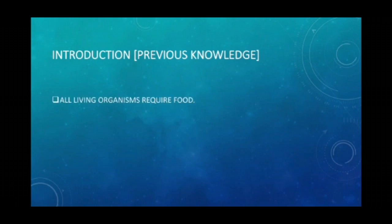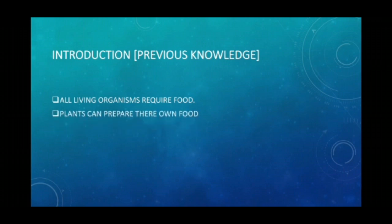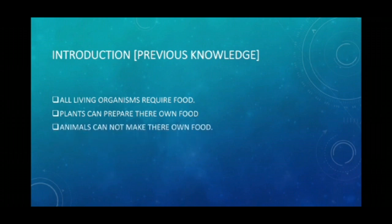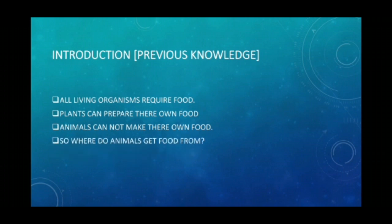All living organisms require food. The main living organisms are plants and animals, and all of them need food. Plants can prepare their own food through the process of photosynthesis. However, animals cannot make their own food and are thus directly or indirectly dependent on plants for their food requirements. So where do these animals get the food from? The answer will be there in this entire lesson.